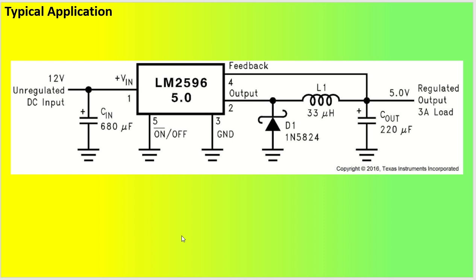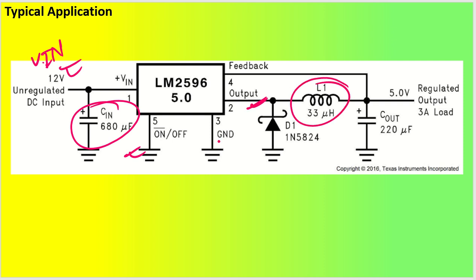In the typical application, you have input voltage Vin — say 12V — with one electrolytic capacitor of 680 µF at the input. There's an on/off control pin: pull it down to keep it permanently on, pull it up to switch it off. The output pin requires one inductor giving you a regulated 5V output, one output capacitor of 220 µF, and one catch diode. So only four components are needed.